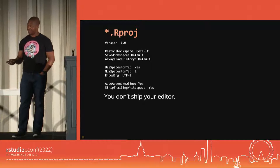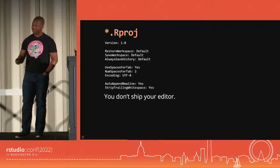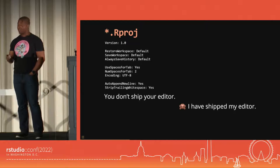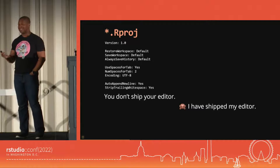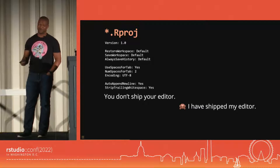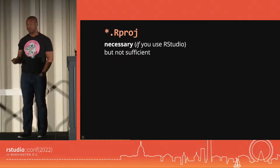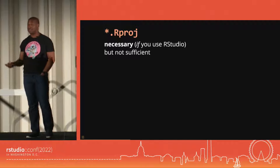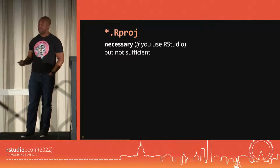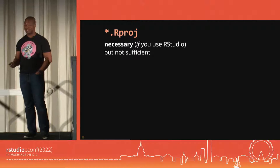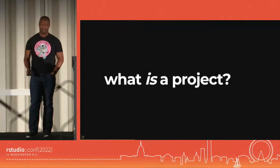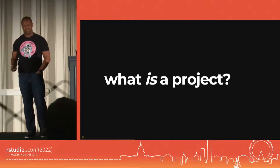I'm making a lot of declarative statements, and part of this comes from a history of screwing things up pretty catastrophically. I have actually shipped my editor, and I ended up debugging my code in our general counsel's office — not where I want any of you to be. The RStudio project file is necessary if you use RStudio, and not everyone does use RStudio. But for the purpose of helping us understand what a project is, it's not sufficient. So we have to look elsewhere.